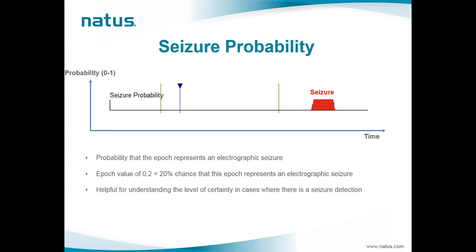Persyst trending includes both seizure detection and seizure probability trends, which are closely related and represent stages in the output of the Persyst seizure detector algorithm. The seizure probability represents the probability that an epoch represents an electrographic seizure — for instance, a value of 0.2 means there is a 20% chance that epoch represents an electrographic seizure. The seizure probability trend provides a second-by-second display of calculated seizure probability, in contrast with the seizure detection trend, which provides a discrete value of 0 or 1 depending on whether a seizure has been detected.